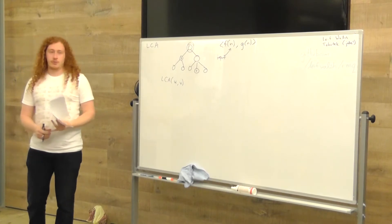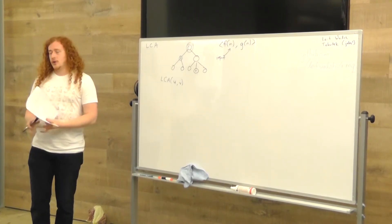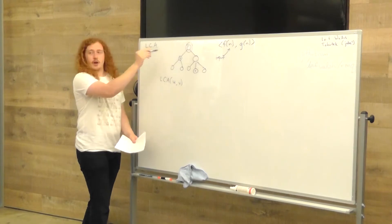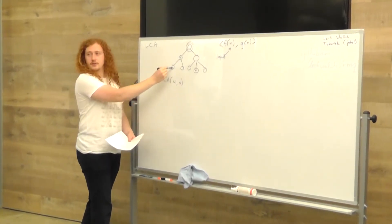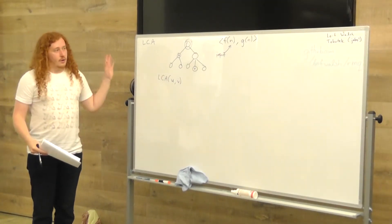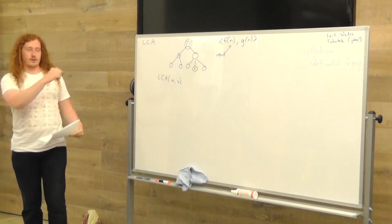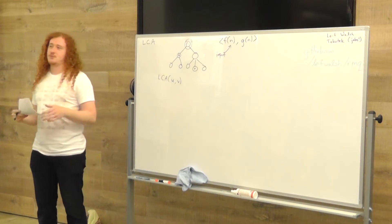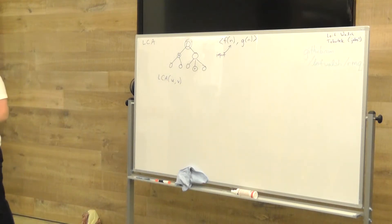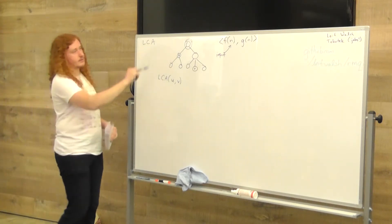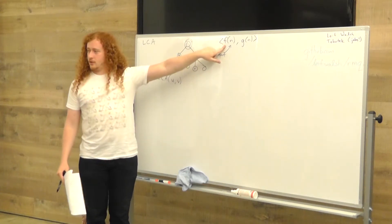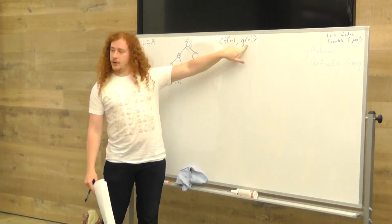We talk about things that are log N, which means you're usually doing some kind of binary search. We talk about things that are quadratic or N squared, which means maybe for every node we need to look at every other node — N things for this node, N things for this node, so we have N times N, that's N squared. N here is the input size — the number of nodes in the tree. I'm going to talk about preprocessing in F of N time and answering queries in G of N time.